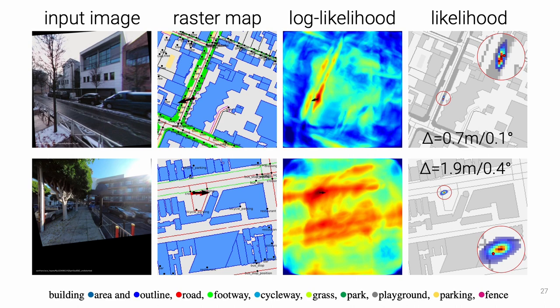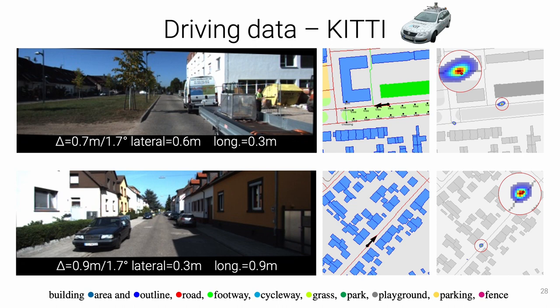We evaluate our network for driving viewpoints on the KITTI dataset. The model was not trained with any image from this city, but generalizes well because the map is standardized all around the world. The position error is only 70 cm, despite the lack of distinctive objects — there are mostly buildings and roads visible in these maps.